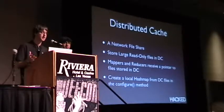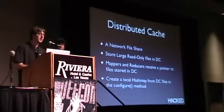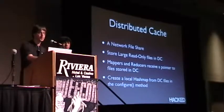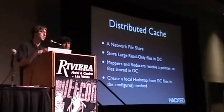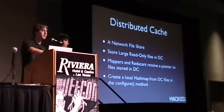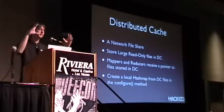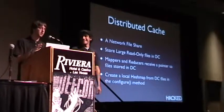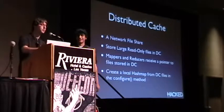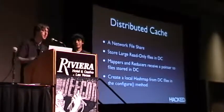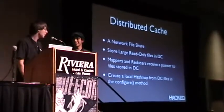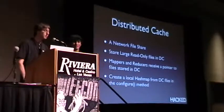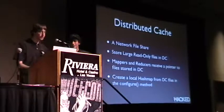Distributed Cache is just pretty much a network file share. You start with large read-only files. Your mappers and reducers receive a pointer to where the files are stored in Distributed Cache. This is a really important one: you have to copy the file out of Distributed Cache into the RAM on each node, so you create a hash map in your configure method which goes above your mapper or reducer. I had a job where I didn't do this and ran it for like five and a half hours, then crashed the whole cloud. Bad idea — you want to avoid that.